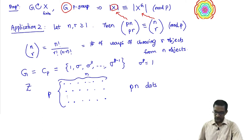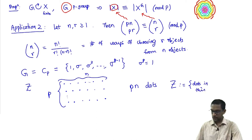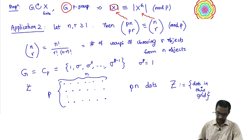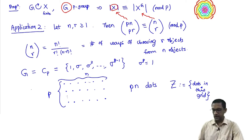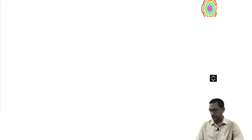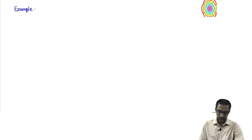I am going to take my set Z to be the set of all the dots in this grid. Then the set X itself can be chosen to be all subsets of Z of cardinality pr. The proof is best illustrated by an example, so let me choose concrete numbers: n = 4, r = 2, and prime p = 3, so that I can draw a nice figure.